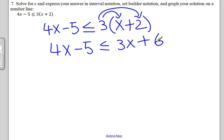Now we try to get all the x on one side, so we can subtract 3x on both hand sides. Then once we do that, we get 4x minus 3x.